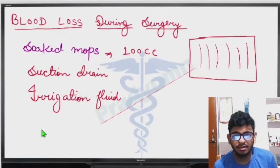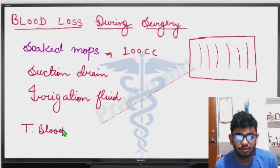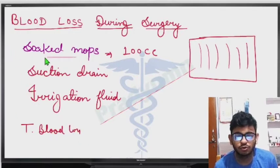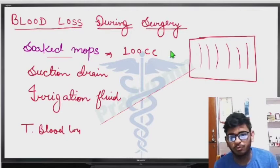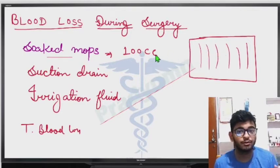To calculate total blood loss, we add soaked mops and suction drain blood, then subtract irrigation fluid. For example, if we have 3 soaked mops, that gives us 300 cubic centimeters of blood.